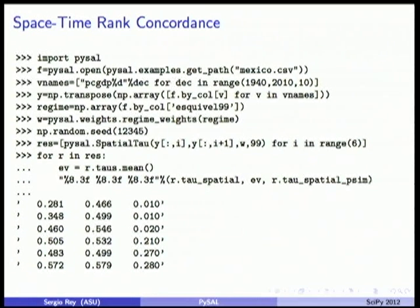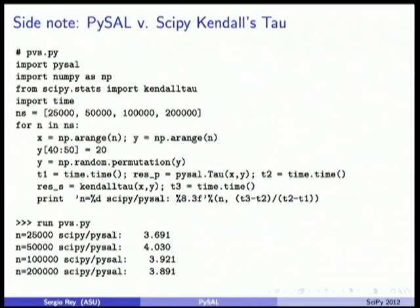This is an example looking at Mexico regional income dynamics. In implementing this, I had to develop a fast algorithm for Kendall's tau because it's an O(n²) runtime. I started using Kendall's tau from SciPy and then implemented a tree-based method, which turned out to be actually faster. Maybe we'll put in a pull request for this.